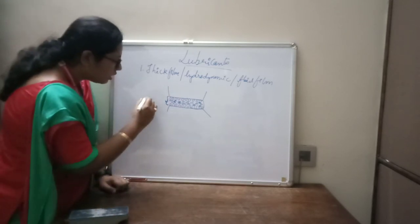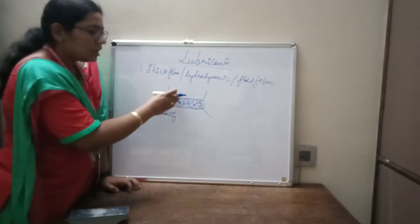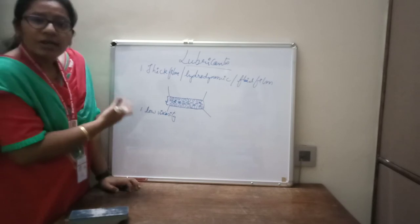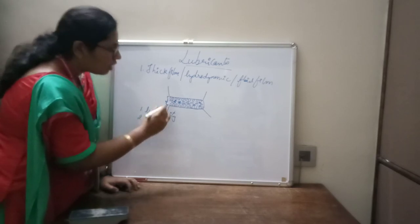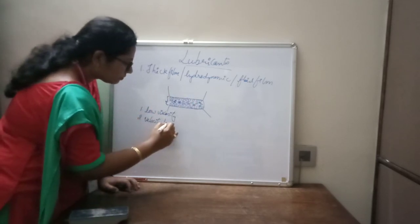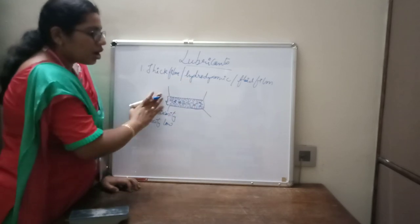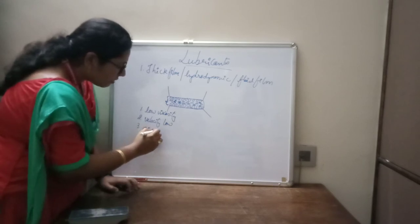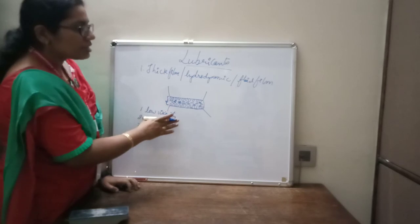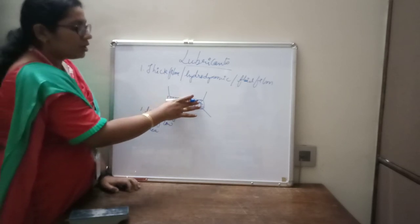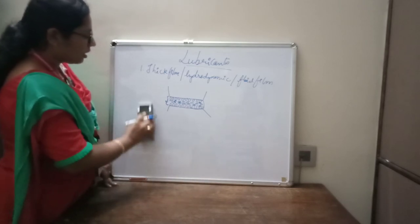We require a lubricant with low viscosity for this type. We also have to consider how wide the surface is — the area on which we are applying the lubricant is also very important. If the area is large, its ability to slip off will be very low. These are some of the important characteristics of the fluid used in thick film lubrication.